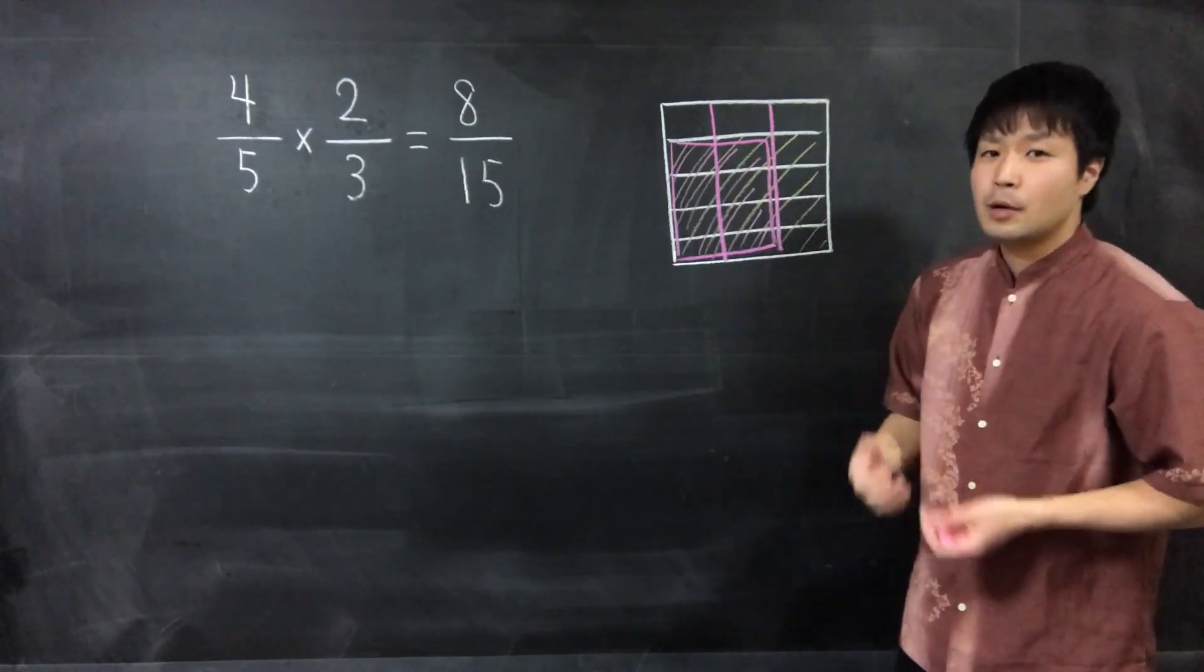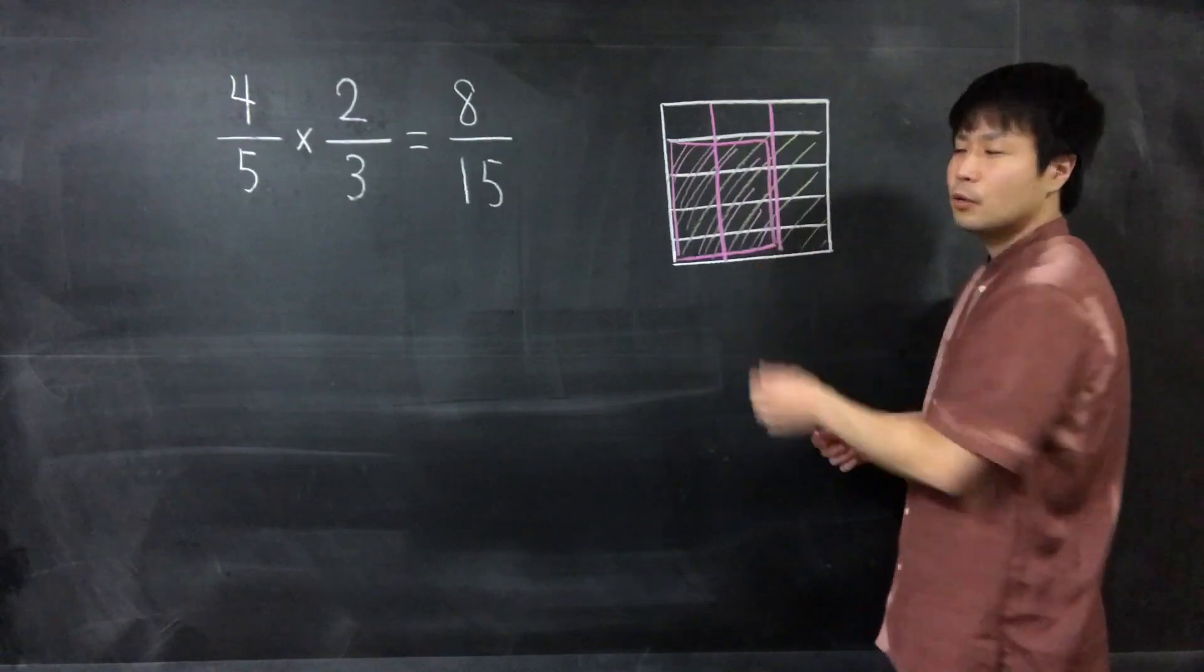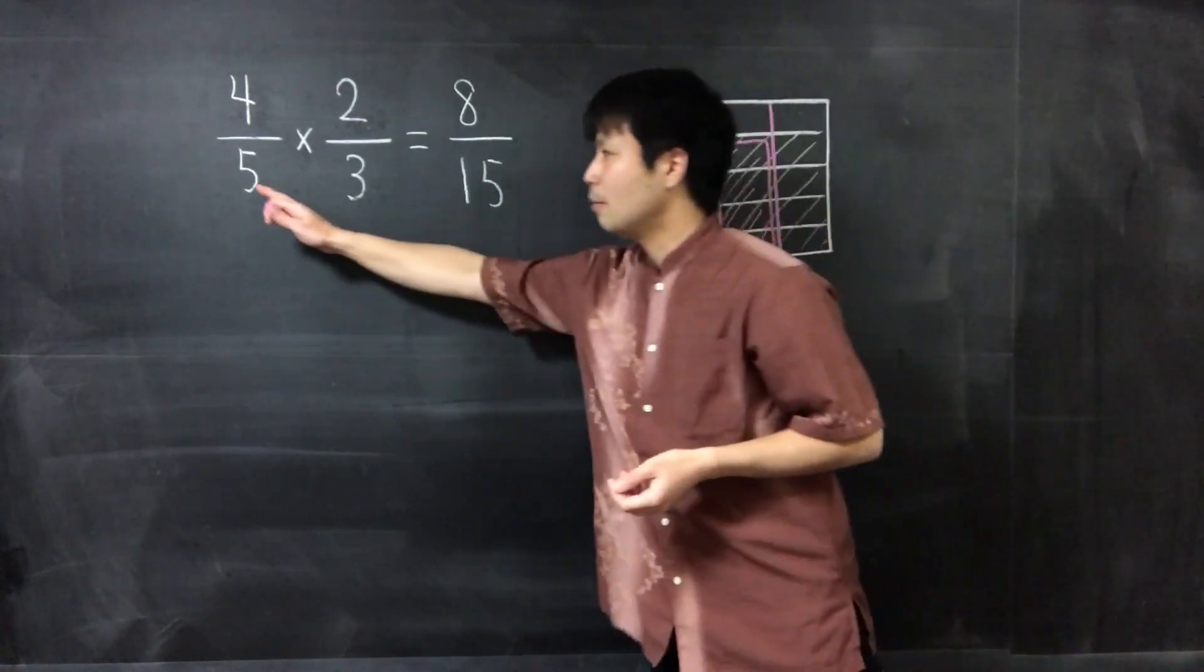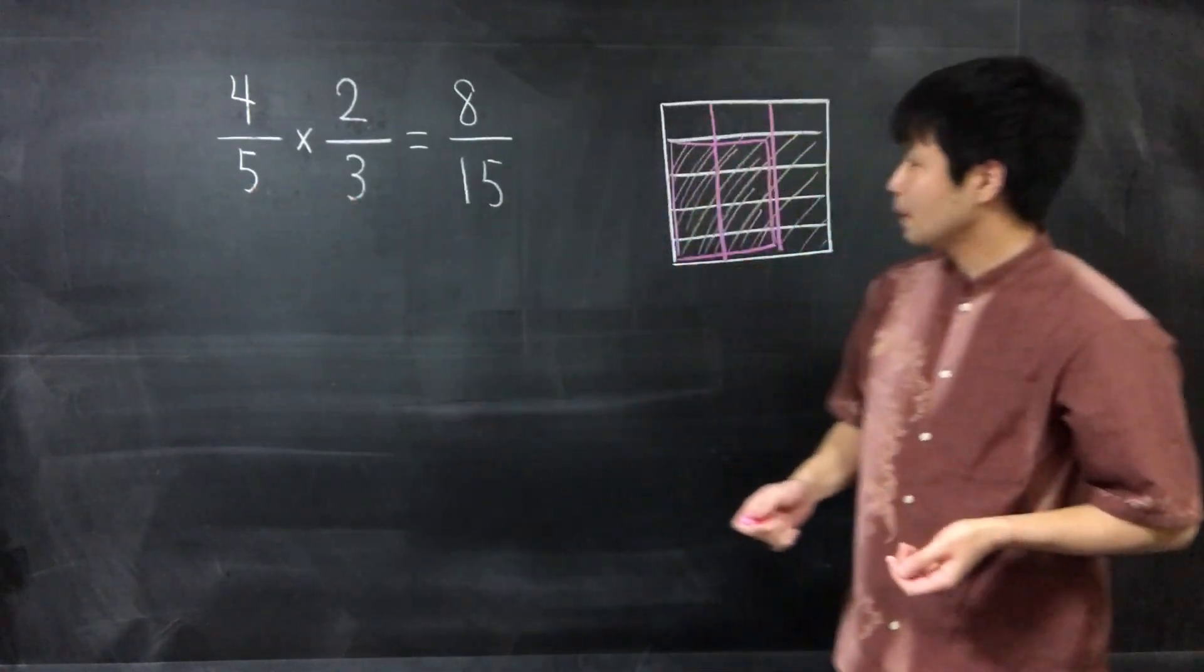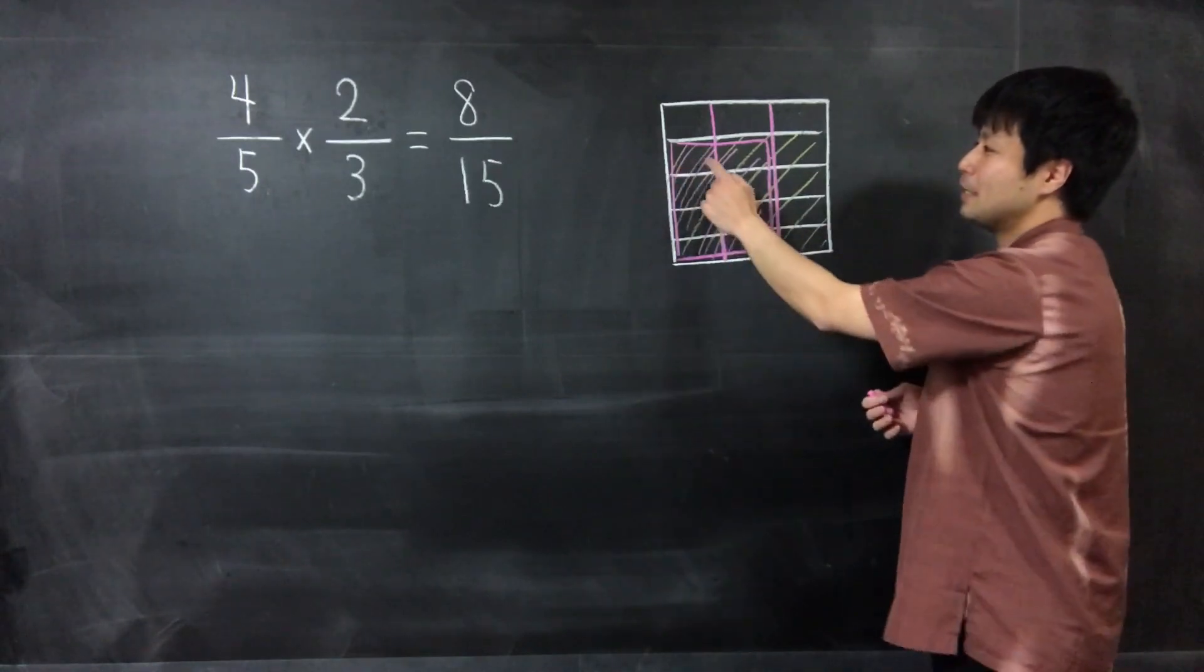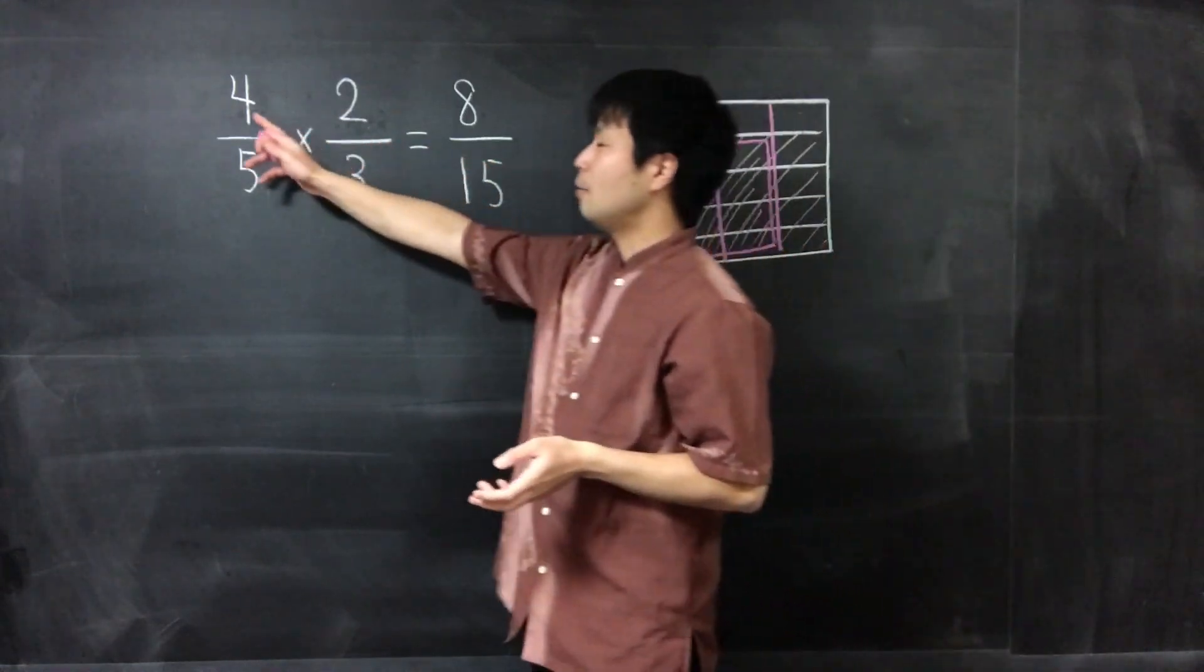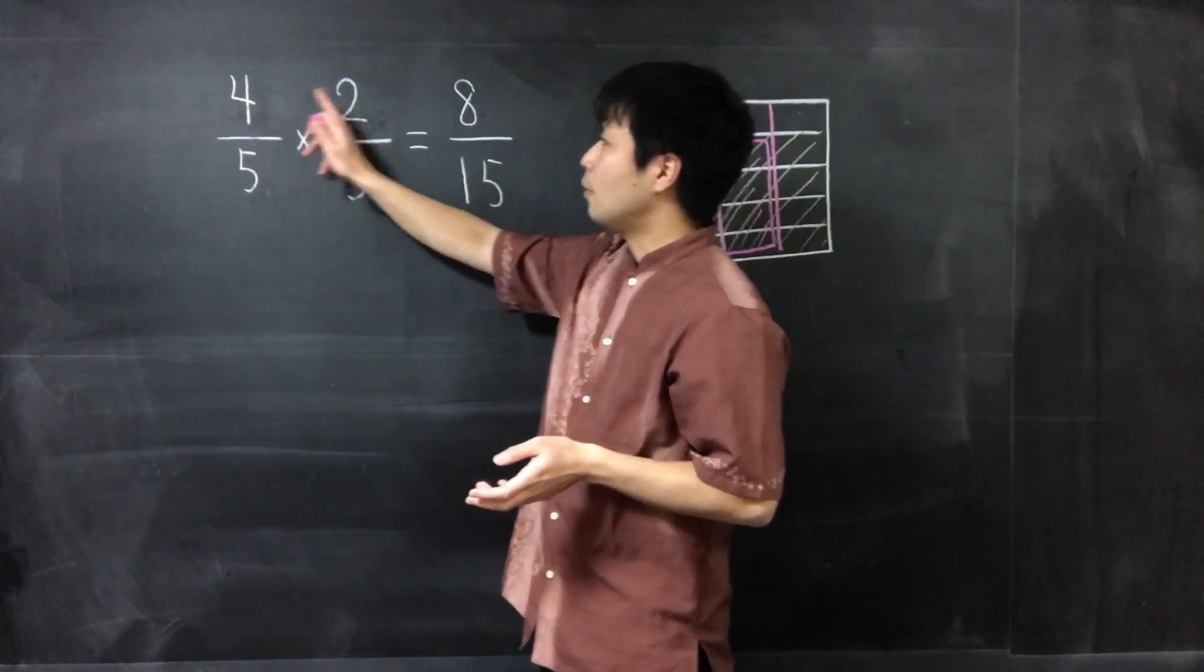After dividing, we get 15 small rooms, which is obtained by multiplying 5 and 3. And the amount we want is 8 rooms, which is obtained from multiplying 4 and 2.